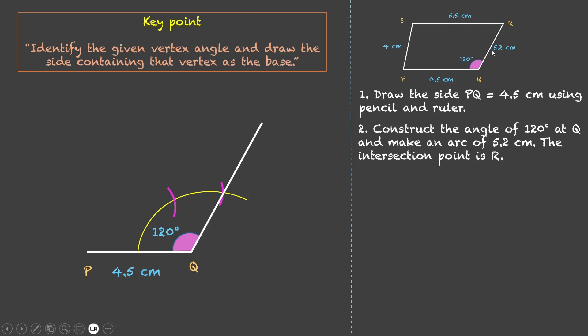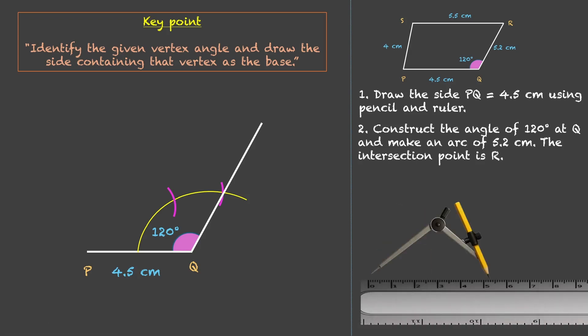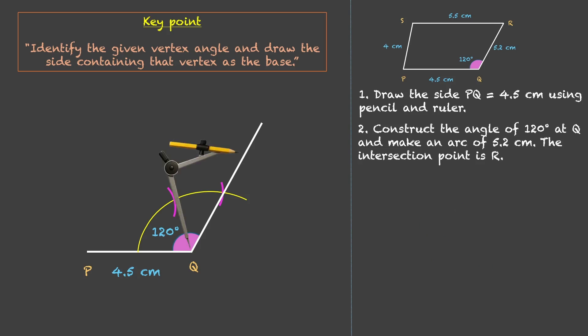Now, we have been given QR. So we just need to put our compass over here and make an arc of 5.2 cm. So for that, let's open our compass to 5.2 and place it at Q and make an arc of 5.2 and this point now becomes R. So QR is 5.2.